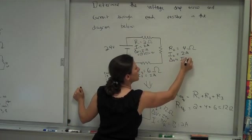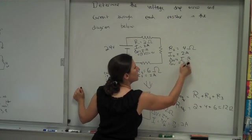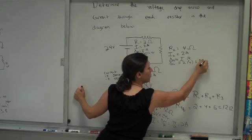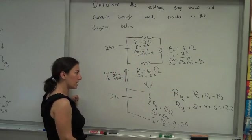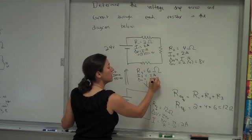And if I use these numbers, I'm going to get 8 volts, so a little more voltage drop across the second resistor. And finally, if I use these numbers, I'm going to get 12 volts. So I've done everything the problem asked.